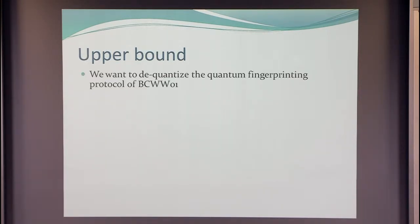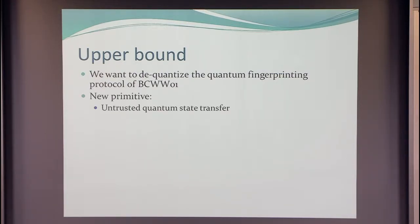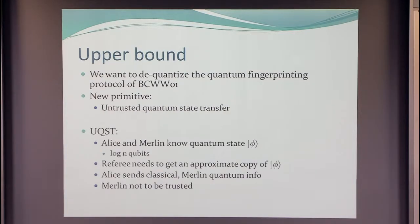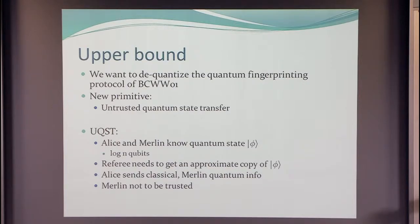Let me say a bit about the upper bound in the quantum case — something interesting is happening there. We want to de-quantize the quantum fingerprinting protocol, and what we use is a new primitive in quantum information that we call untrusted quantum state transfer. Here, Alice and Merlin know a classical description of a pure quantum state φ — a state on log-n qubits — and the referee needs to get an approximate copy of this quantum state as an actual quantum state, not just a classical description.